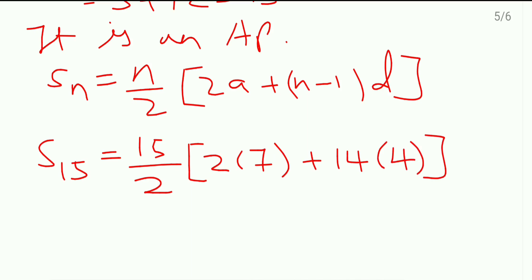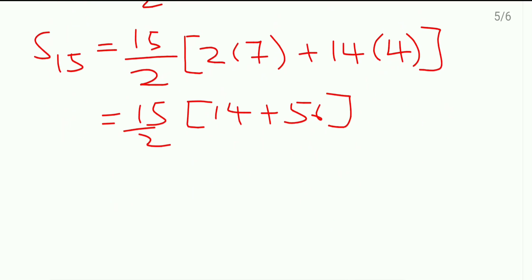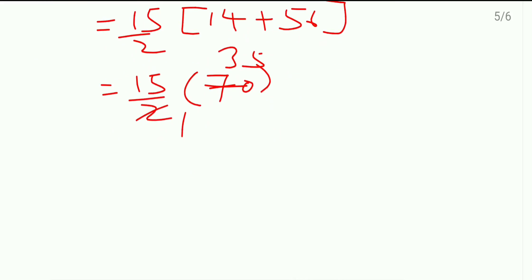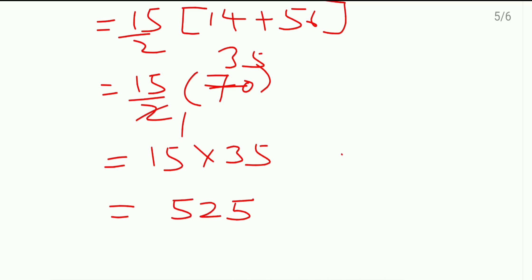So S15 = 15/2 × [14 + 14×4] = 15/2 × [14 + 56] = 15/2 × 70 = 15 × 35 = 525. The sum of the first 15 terms is 525.